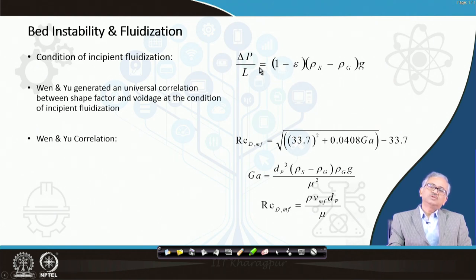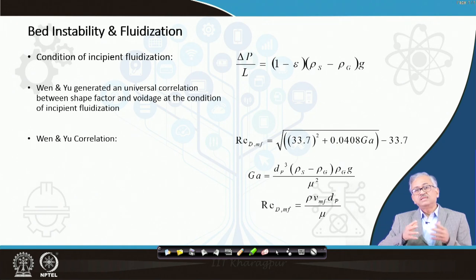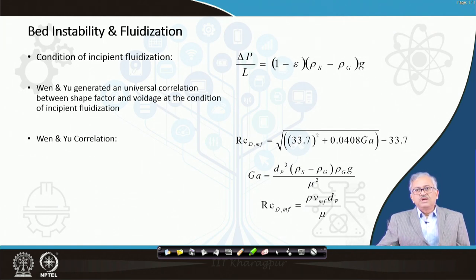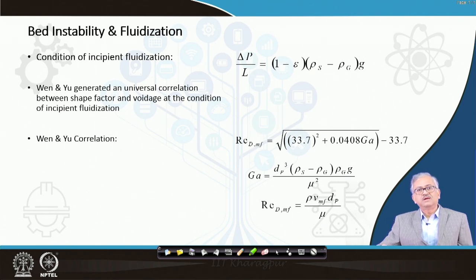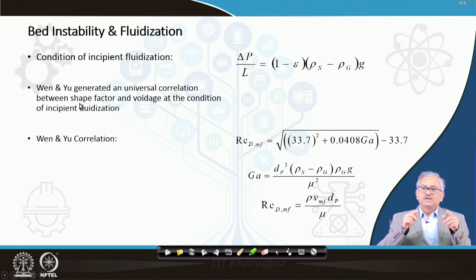When those two terms become equal, that is called the condition of incipient fluidization. The pressure drop across the bed is a function of gas velocity, voidage, and particle diameter. It also depends on size, shape, and distribution of particles, making it very complicated. However, it has been found through experiments that the shape factor of the particle and the voidage can be nicely correlated, and there exists a universal correlation at the condition of incipient fluidization.